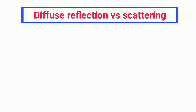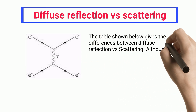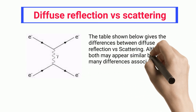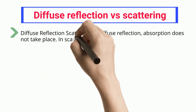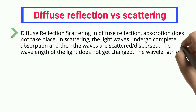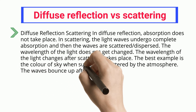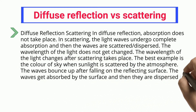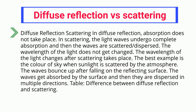Diffuse reflection versus scattering: although both may appear similar, they have many differences. In diffuse reflection, absorption does not take place, whereas in scattering, the light waves undergo complete absorption and then are scattered and dispersed. The wavelength of light does not change in diffuse reflection, whereas the wavelength changes after scattering. The best example is the color of sky when sunlight is scattered by the atmosphere. In diffuse reflection, waves bounce back after falling on the reflecting surface; in scattering, the waves get absorbed and then dispersed in multiple directions.